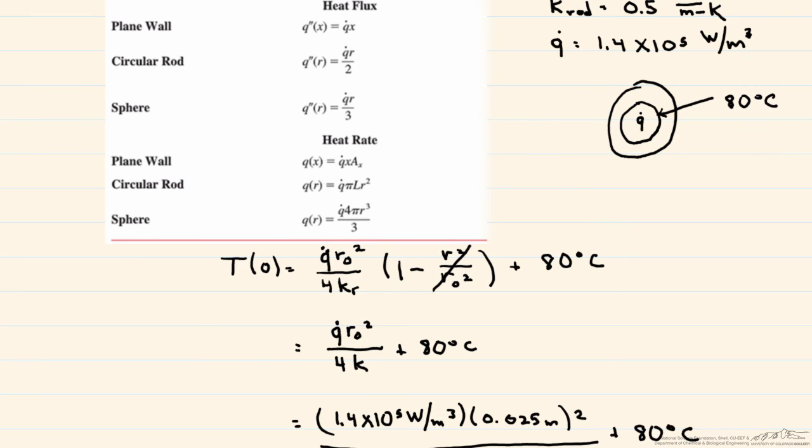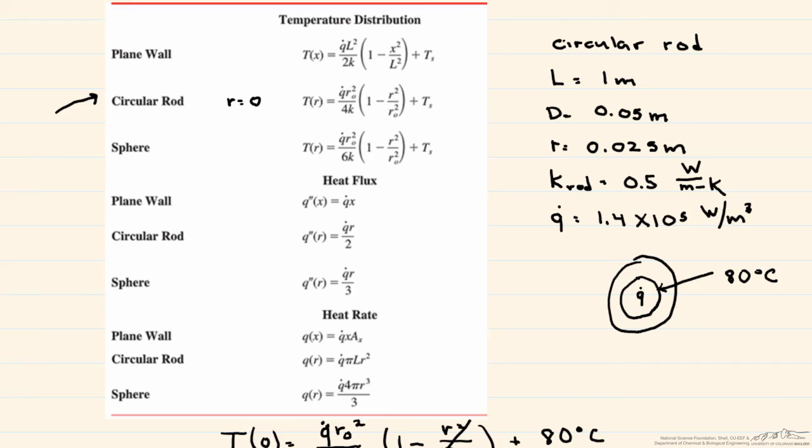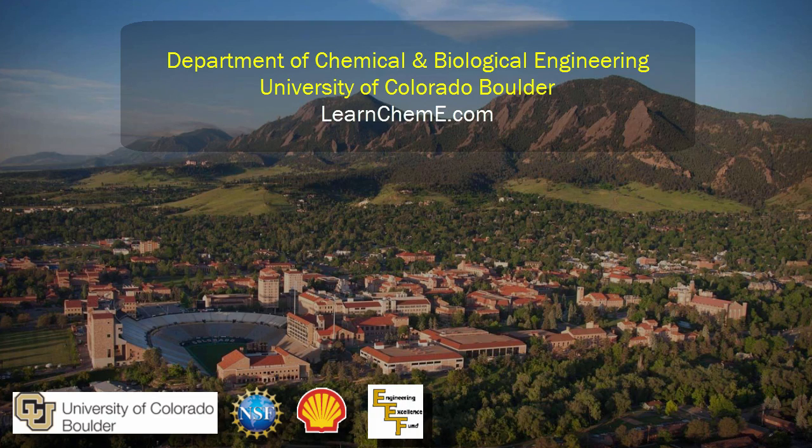And you can see outside the rod, it's 80 degrees C. And if you saw in our previous screencast, outside the sleeve that covered the rod was 75 degrees C. So just remember, if you are looking anywhere within a generating volume, you can no longer use a thermal circuit. And the best thing for you to do is to use a table such as this.